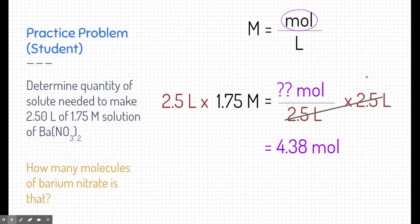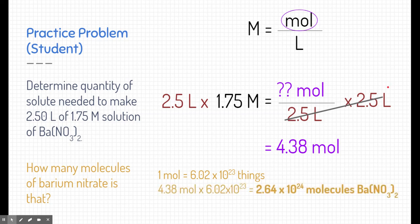All right, I have a bonus question here. How many molecules of barium nitrate is that? So this is kind of an extra above and beyond question, and this relates back to what a mole is. Remember, a mole is a specific quantity, and one mole is 602 sextillion, or 6.02 times 10 to the 23 things. So if we have 4.38 moles of this substance, we can multiply it by that quantity, and we're going to figure out how many molecules we have. So kind of a cool extra bonus of knowing what moles are is we can determine how many molecules we have of a specific substance.